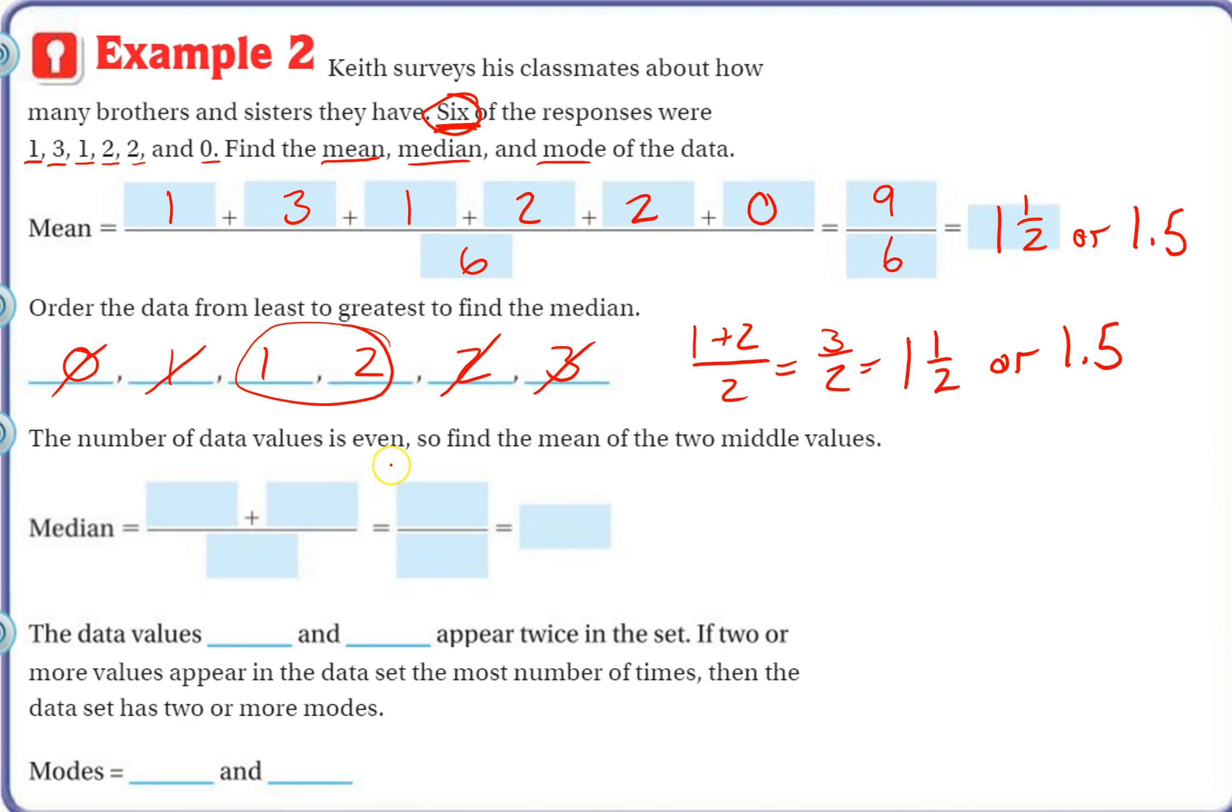Okay, the number of data values is even. That's what we just did. One plus two, divide by two, three halves, one and a half, or 1.5.